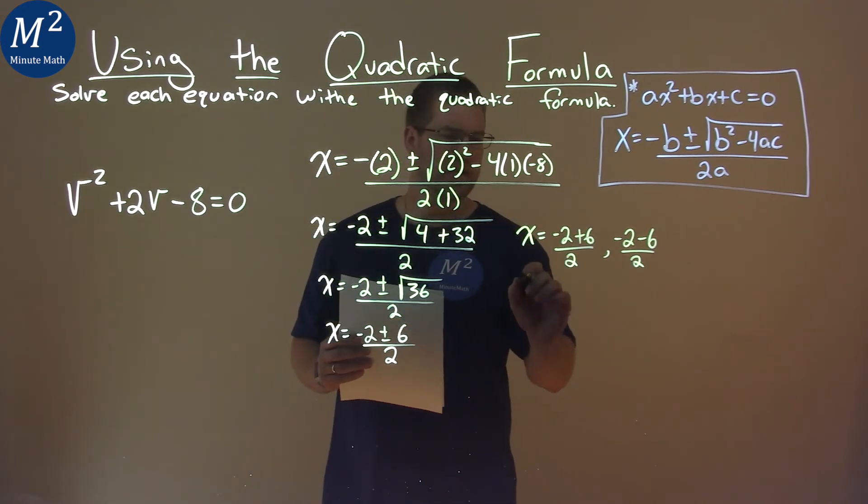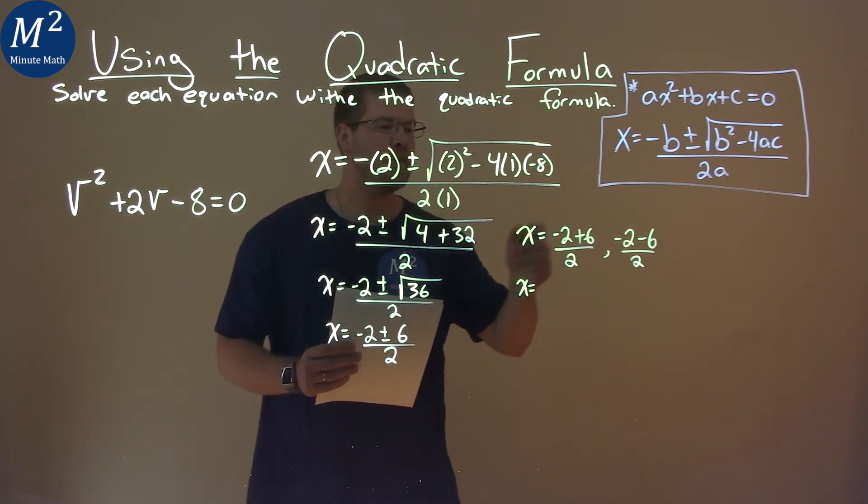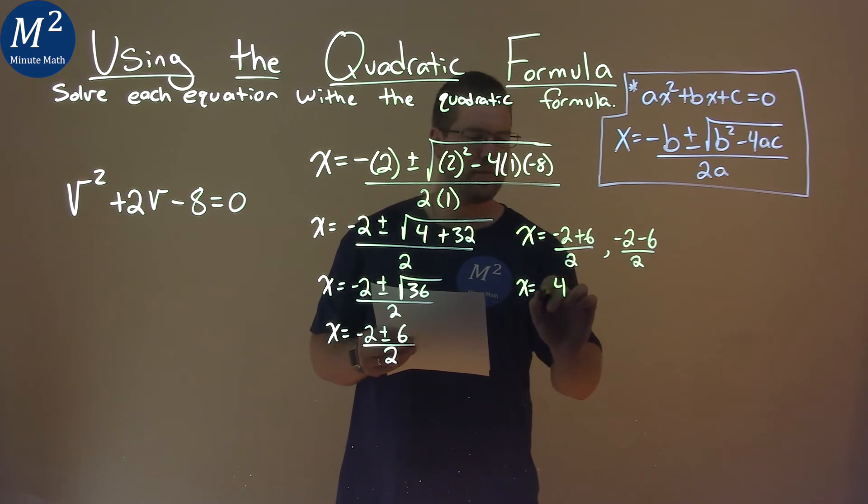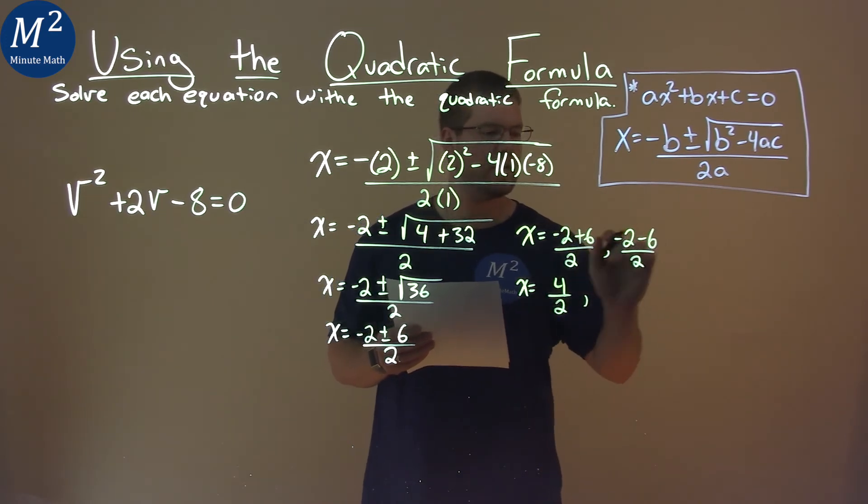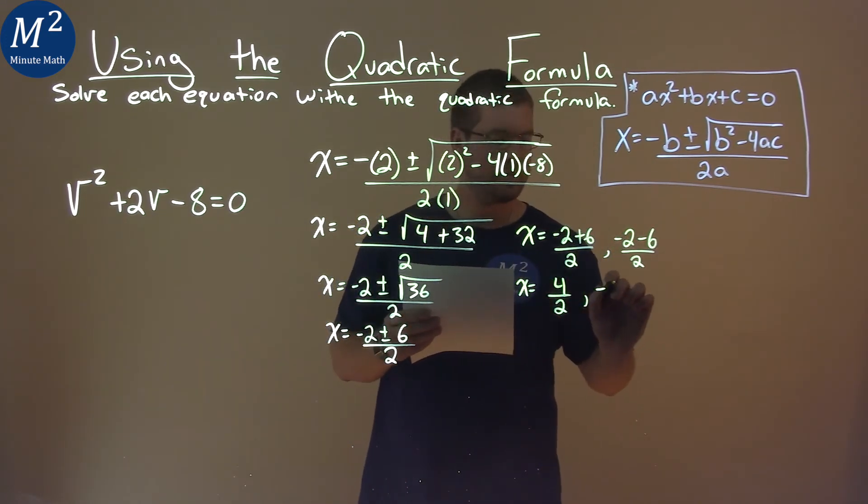So now we're going to solve each part individually. Negative 2 plus 6 is a positive 4, divided by 2, and negative 2 minus 6 is a minus 8, over 2.